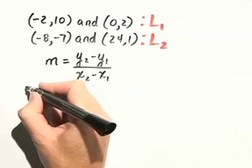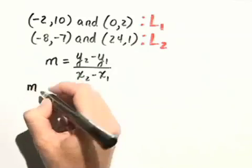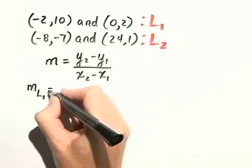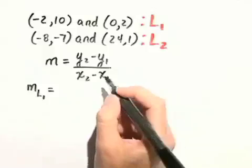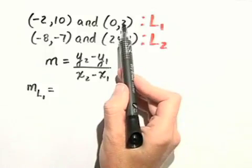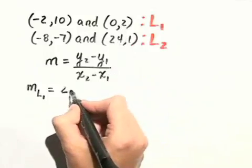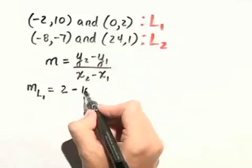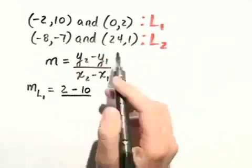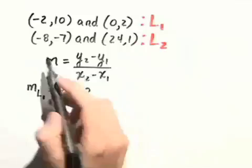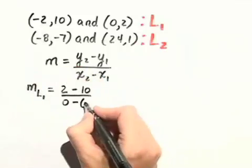So let's call the slope of line 1, m sub L1. That's equal to the difference of the y-coordinates, so we have y sub 2 is 2 minus y sub 1 is 10, over x sub 2 is 0, minus x sub 1 is negative 2.